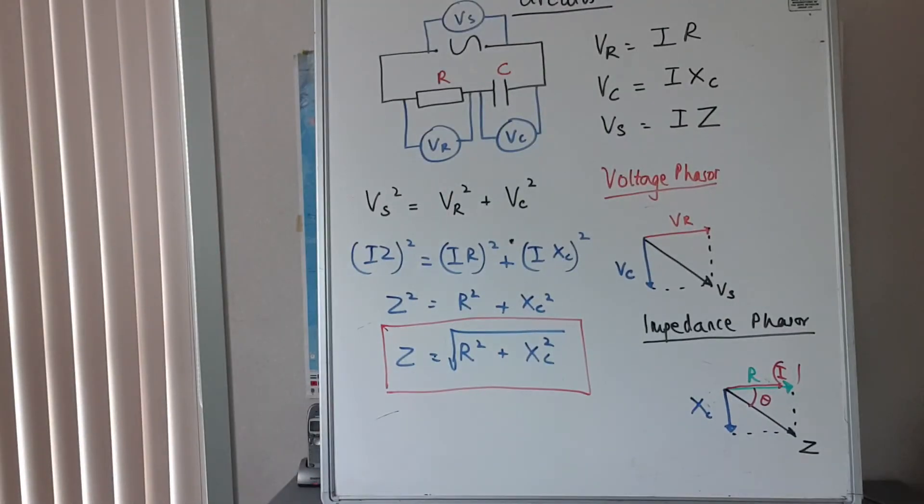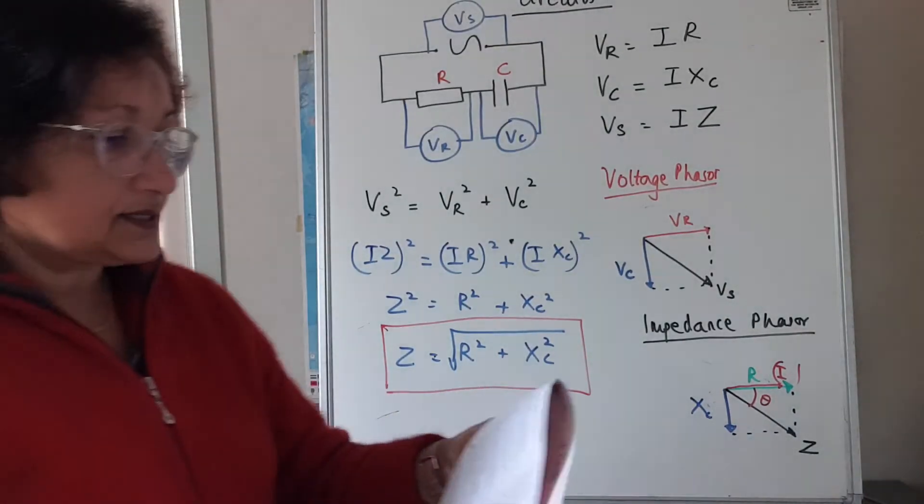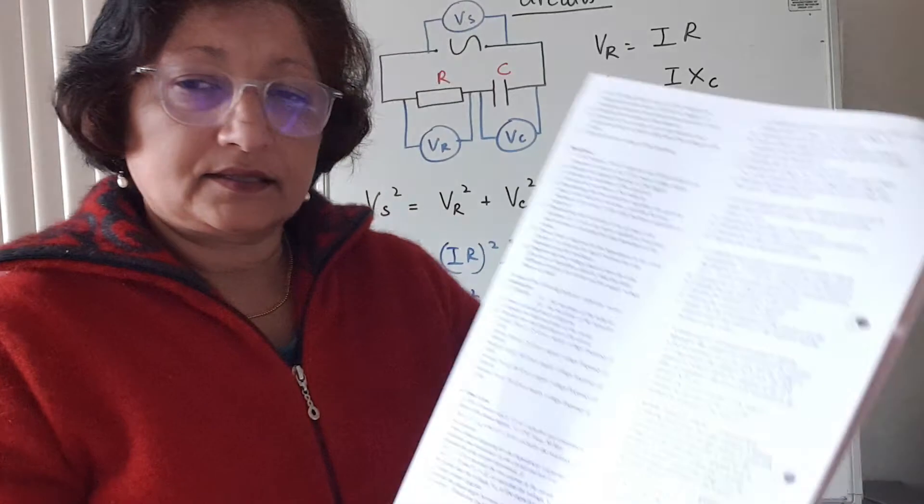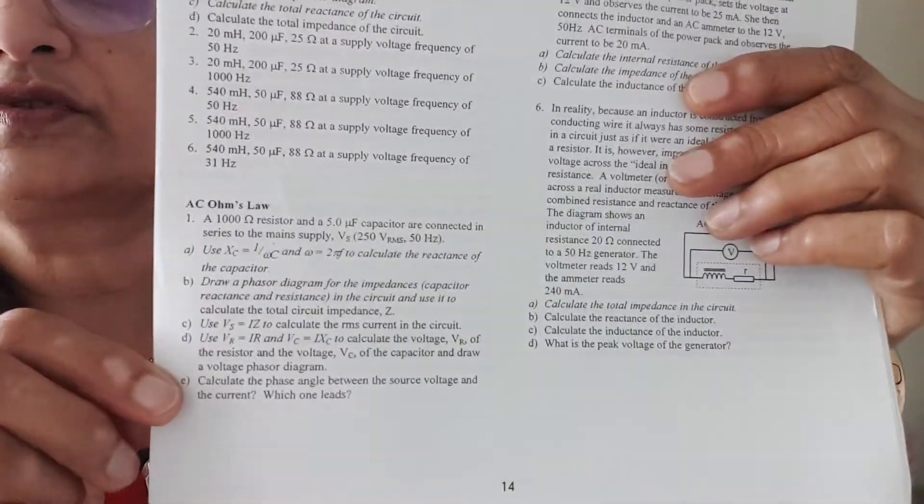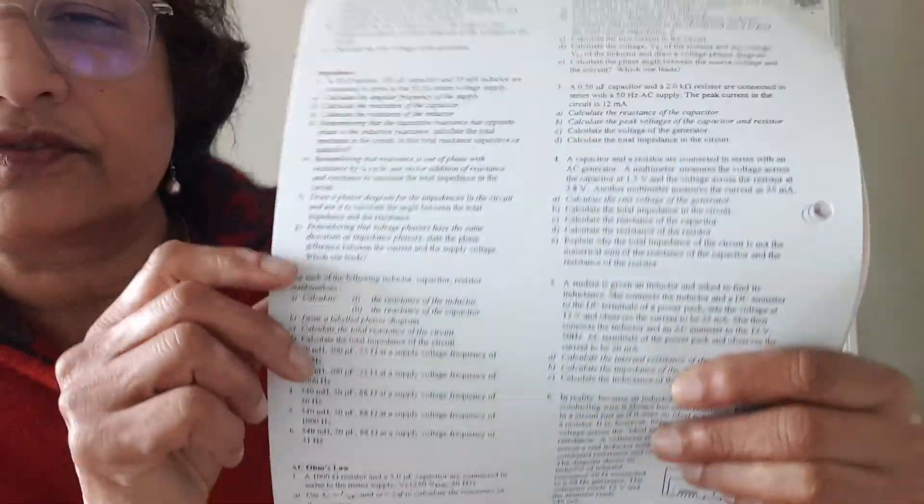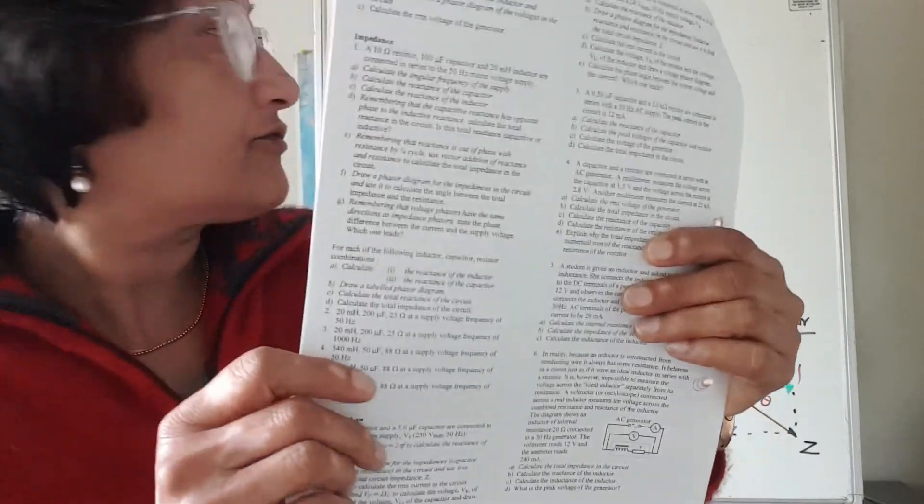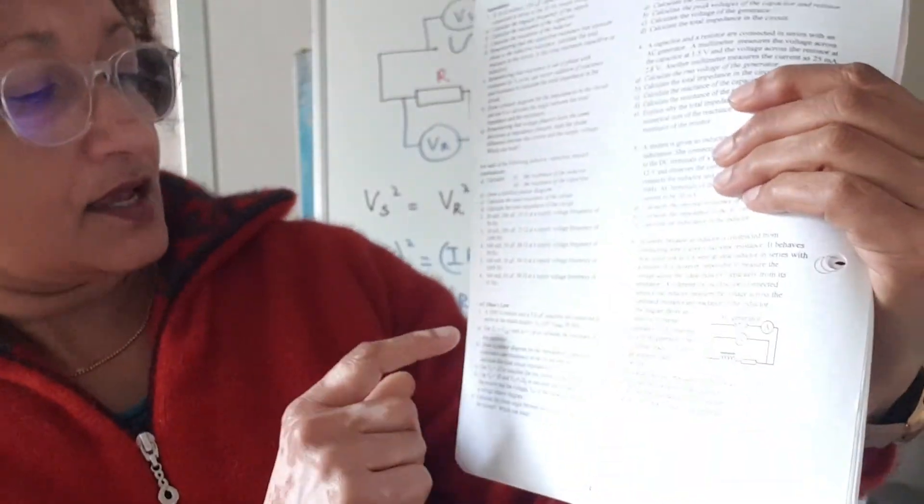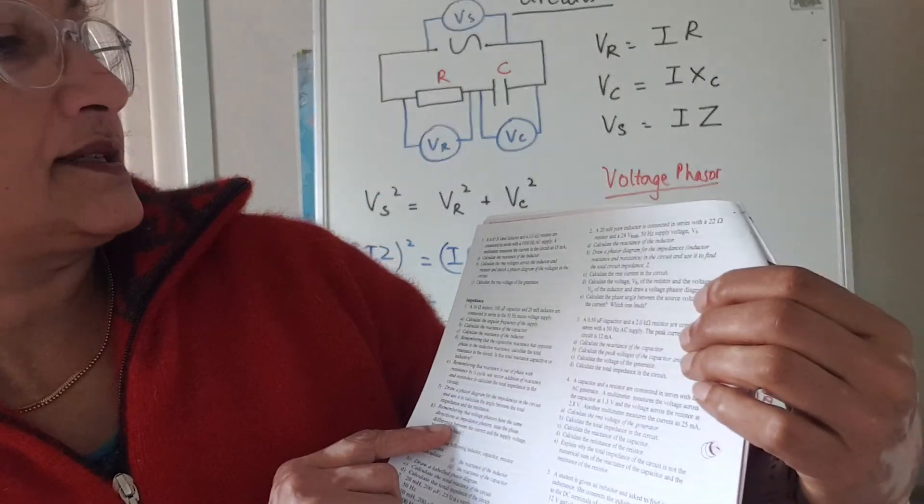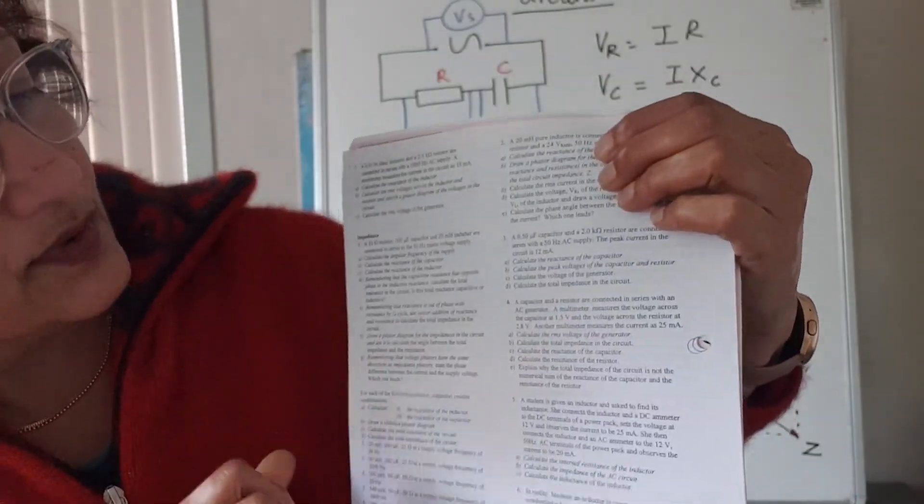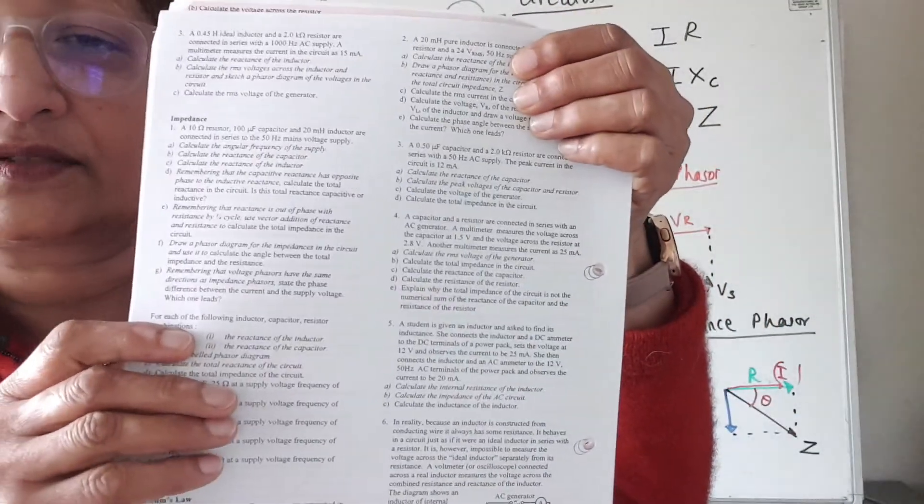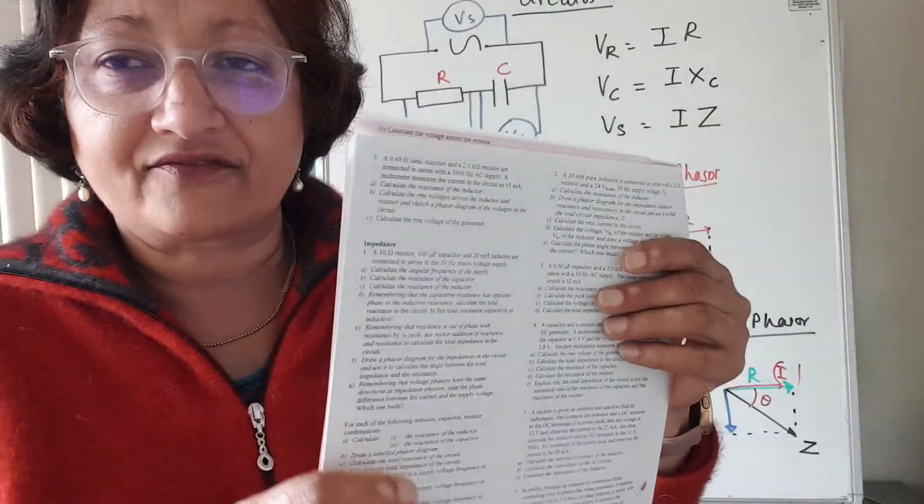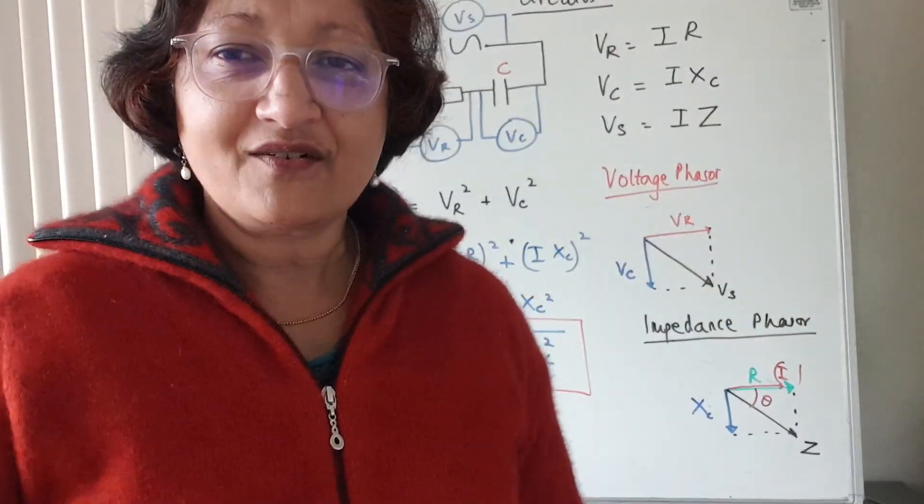At the end of this, in your booklets there are some questions on AC Ohm's law. You can do three of these questions because they are for resistor-capacitor circuits. Do question one, three, and four. Leave question two because it's got an inductor. Bye for now, I hope that helped.